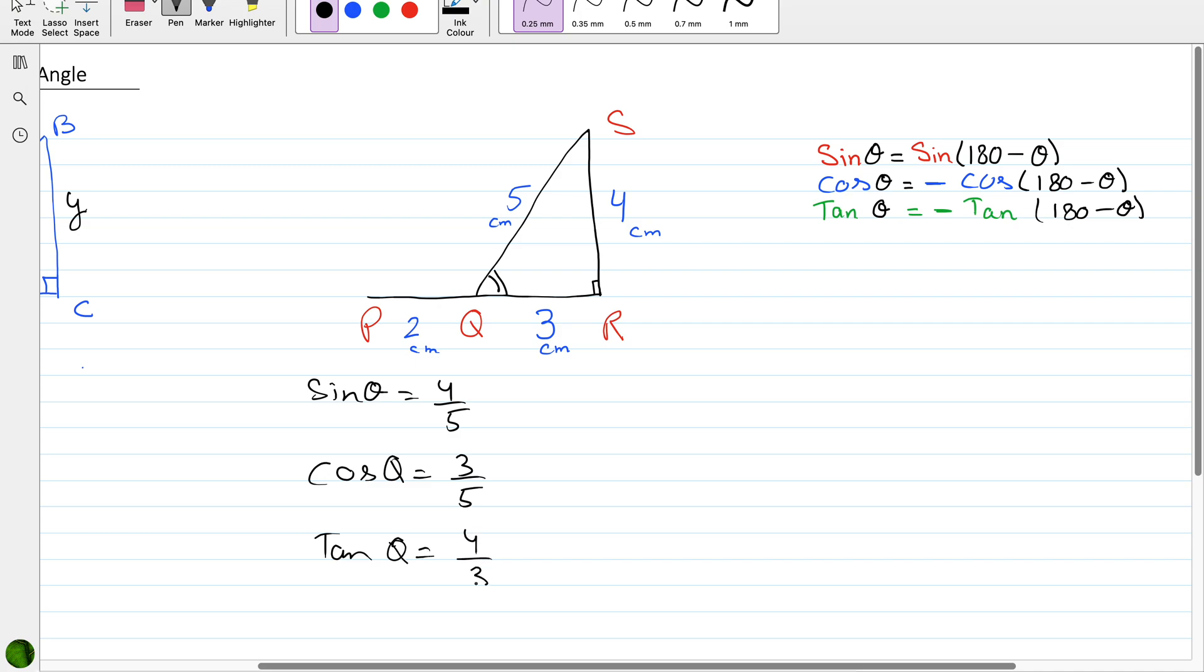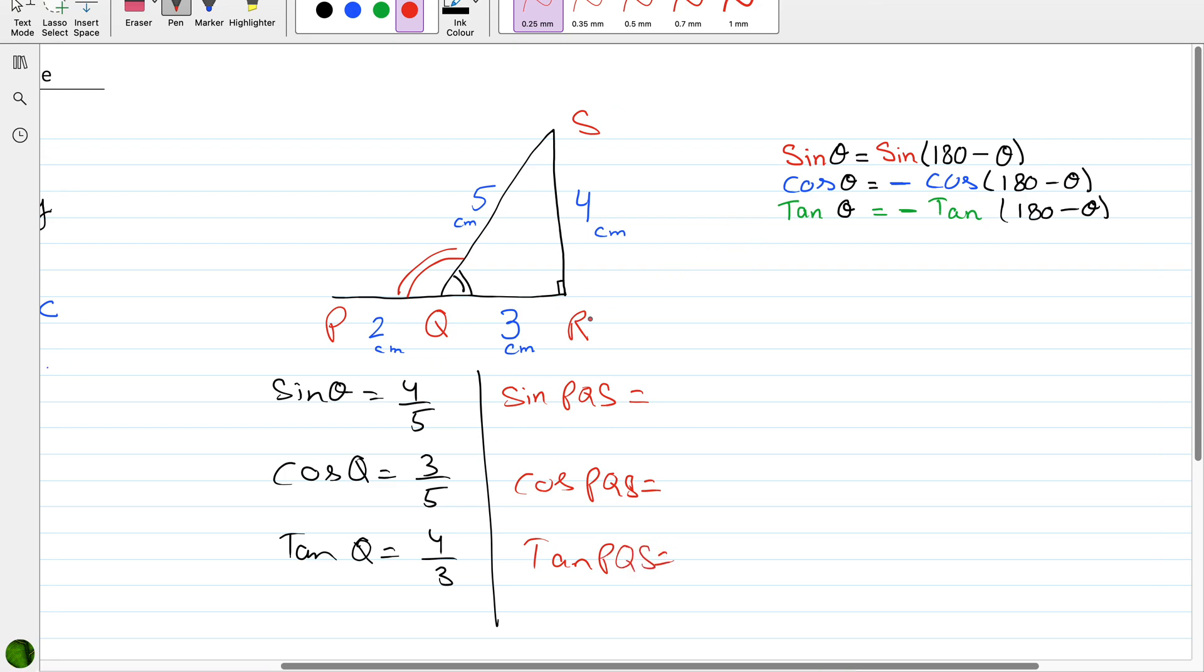But if the examiner is asking you about this obtuse angle at Q, that means sine of PQS, or cos of PQS, or tan of PQS, the obtuse angle. Before we go into this, have a look at these formulas, these identities.